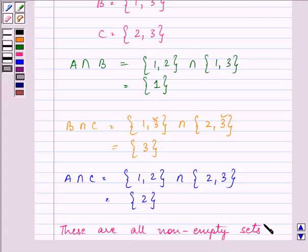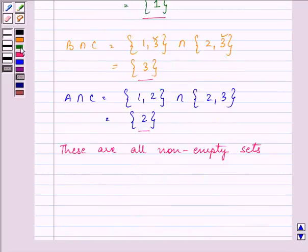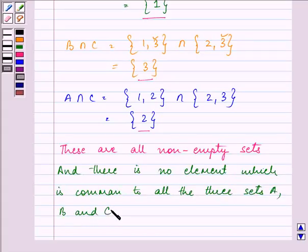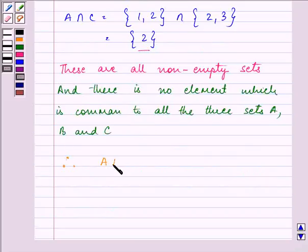That answers the first thing that we were required to answer. These all are non-empty sets and there is no element which is common to all the three sets A, B, and C. Therefore, this proves that A intersection B intersection C is equal to the empty set.